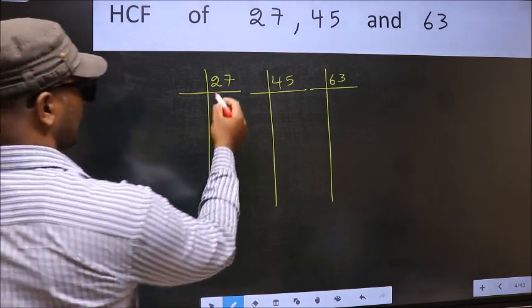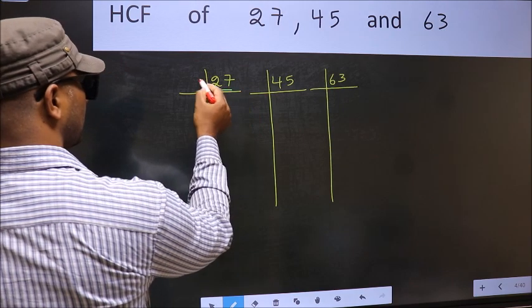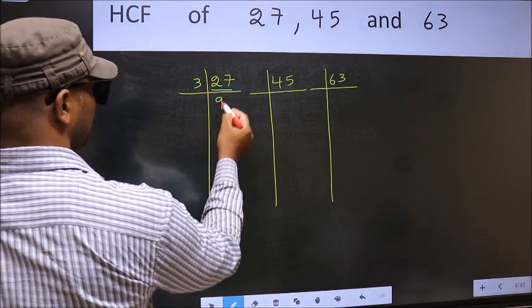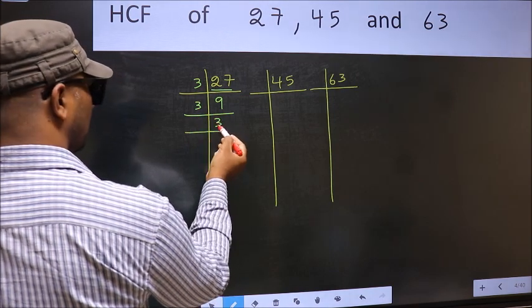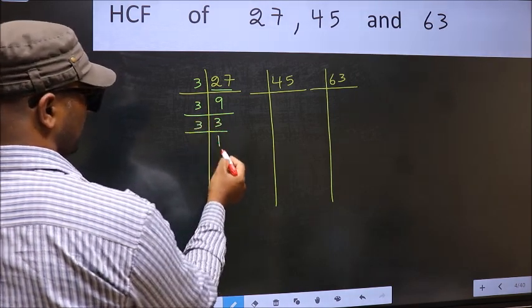here we have 27. 27 is 3 times 9. Now 9 is 3 times 3. Now 3 is a prime number so 3 times 1.